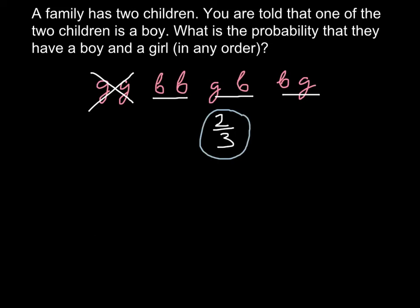And if we were told that the oldest child is a boy, in this case we would have only this possibility and this possibility. So in this case, our answer would be one-half, or vice versa. If we are told that the boy is the second child, then this possibility and this would exist, and once again our answer would be one-half.